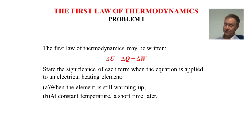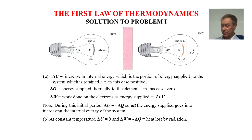Solution to problem 1. Delta U is the increase in internal energy, which is the portion of energy supplied to the system which is retained, in this case positive. Delta Q is energy supplied thermally to the element, in this case zero. And delta W is the work done on electrons as energy supplied equals ITV.